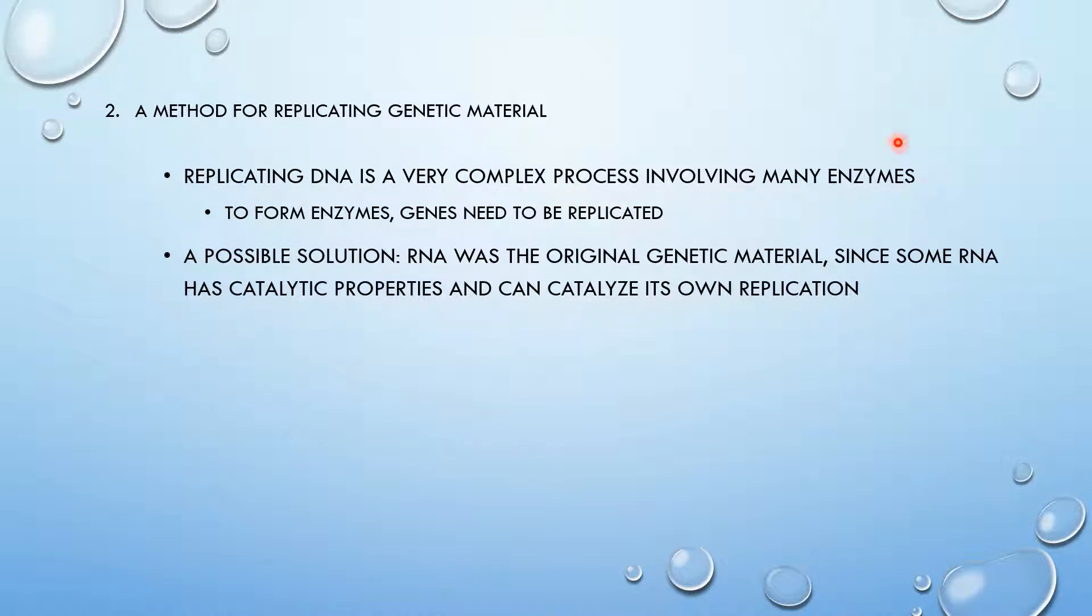Replicating DNA is very complex and it requires enzymes. However, to form enzymes, genes need to be replicated. It's kind of like a circle. If genes are needed to produce enzymes, but enzymes are needed to replicate genes, then it's like a circle that you can never arrive at a conclusion, if that makes sense. So, however, RNA has catalytic properties and therefore it wouldn't have required enzymes to catalyze the replication of it. And that would be an explanation for the second point.